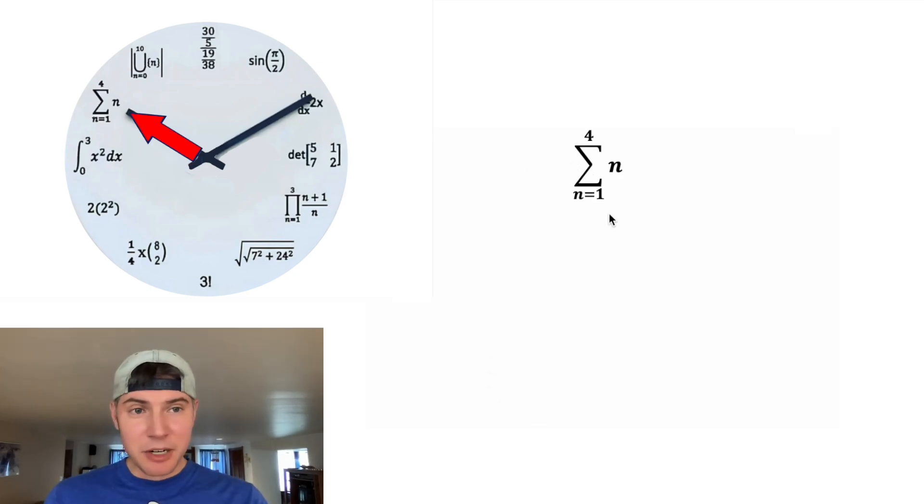Next, we have this sigma notation. So we plug in 1 for n, then we plug in 2 for n, 3 for n, and then we stop at 4 for n because 4 is on top. Since it's sigma notation, we're going to add all these together, and 1+2+3+4 is equal to 10, and that's why this is at the 10 o'clock hour.